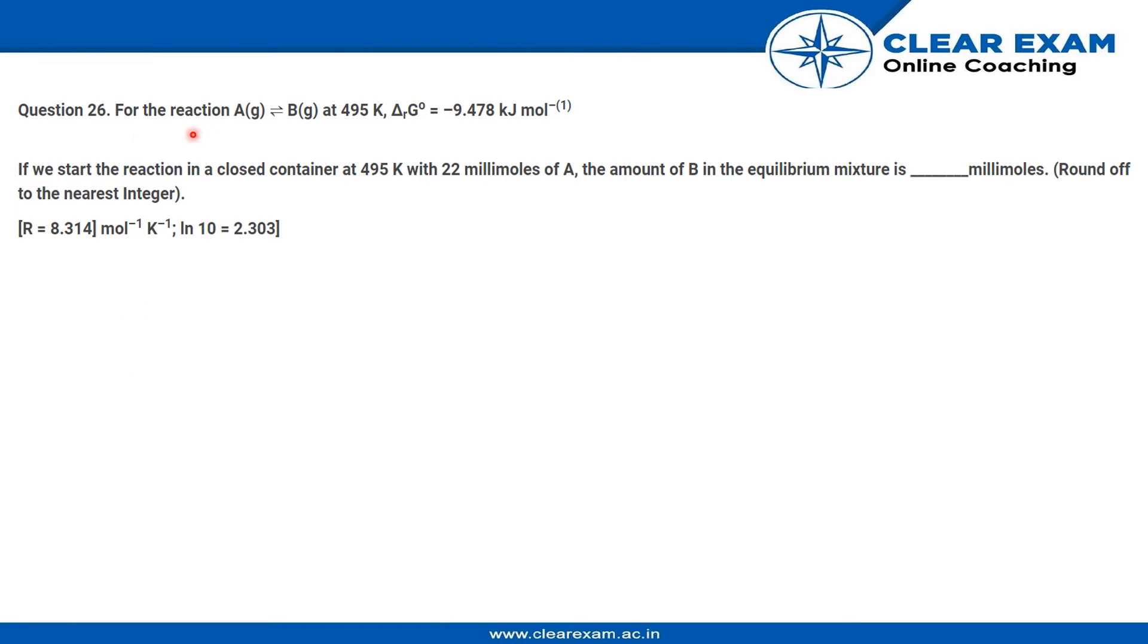The question says for the reaction A gas to B gas at 495 Kelvin, delta G0 to be equal to minus 9.478 kilojoules per mole. If we start the reaction in a closed container at 495 Kelvin with 22 millimoles of A, the amount of B in the equilibrium mixture is dash millimoles.